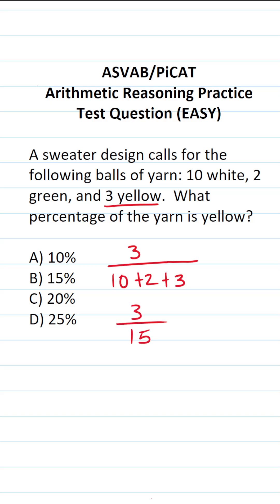We can reduce this fraction by a common factor of 3. 3 divided by 3 is 1, and 15 divided by 3 is 5, giving us 1 over 5.